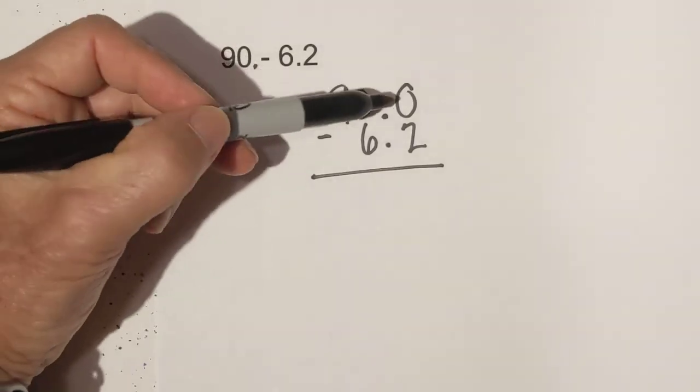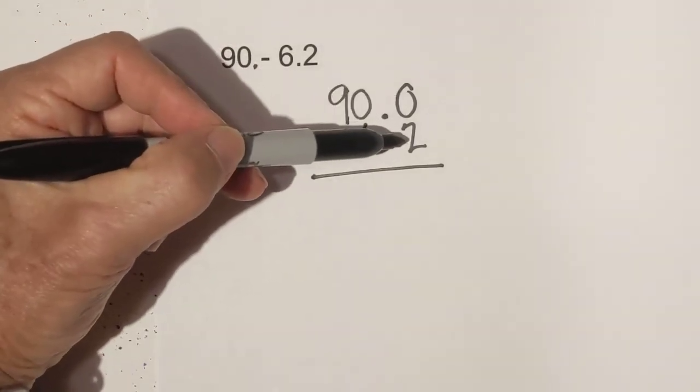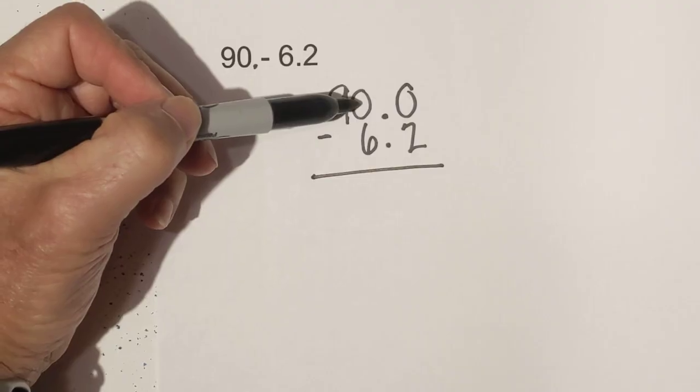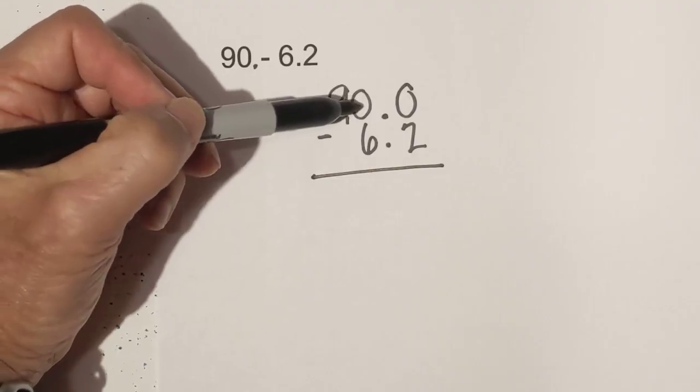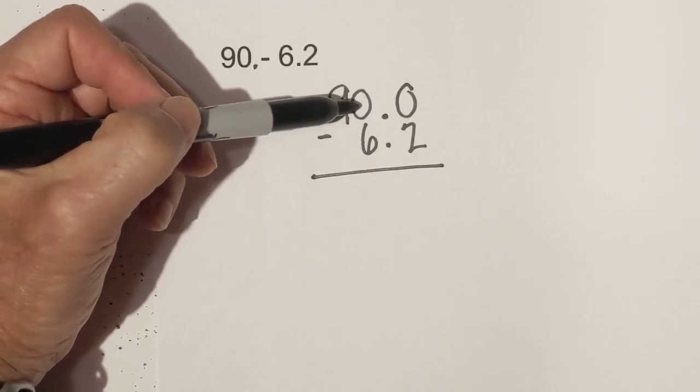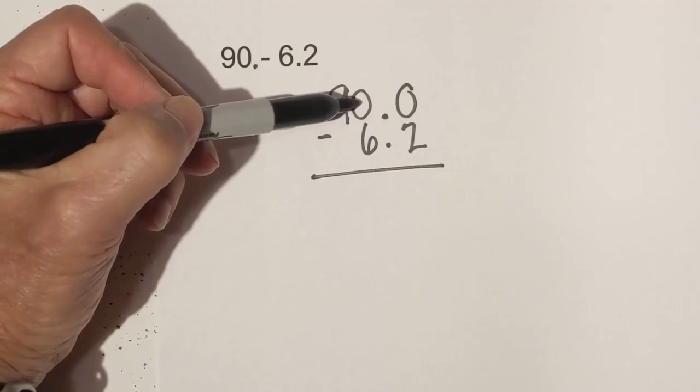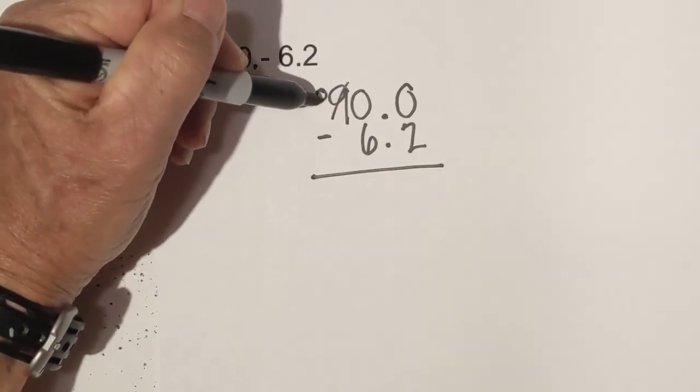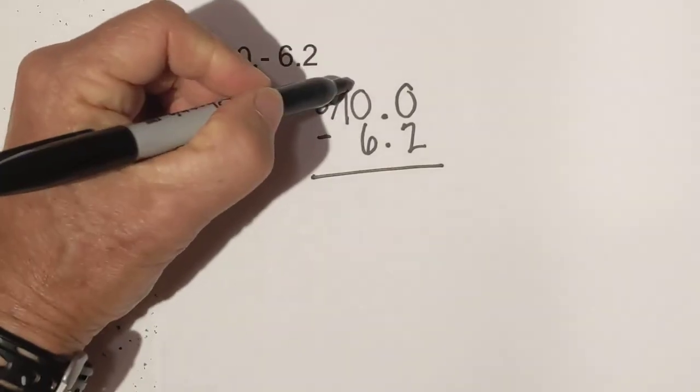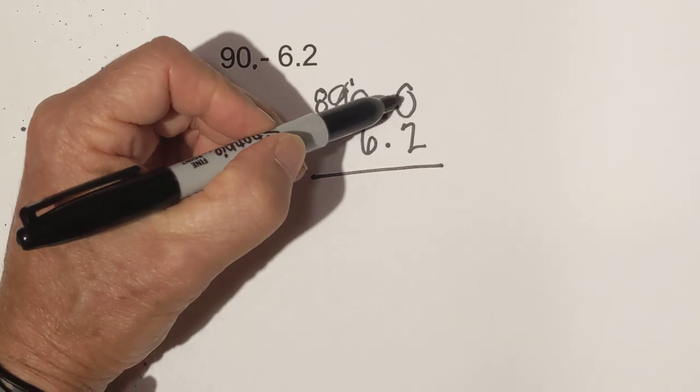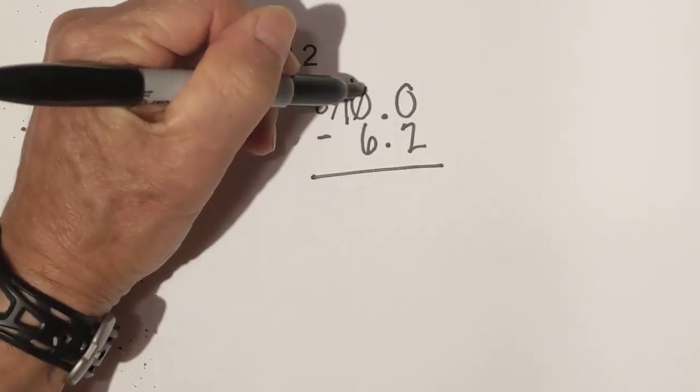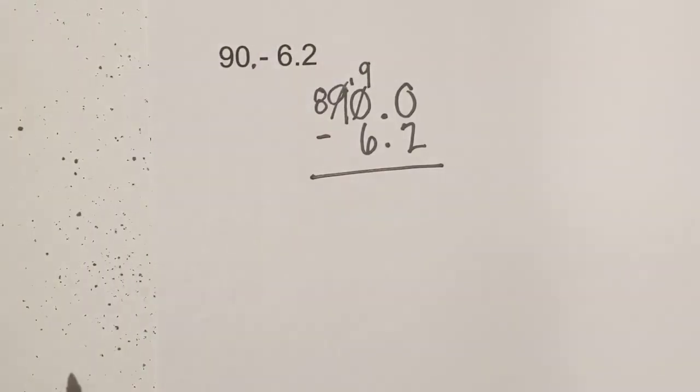Now all we do is subtract. Remember, zero is smaller than two, so we've got to borrow ten from the number to the left. However, the number to the left is zero, which is smaller than six. So it's got to first borrow ten from the nine. This nine becomes an eight and then this becomes a ten. Now it's going to borrow ten from the ten, so it becomes a nine.